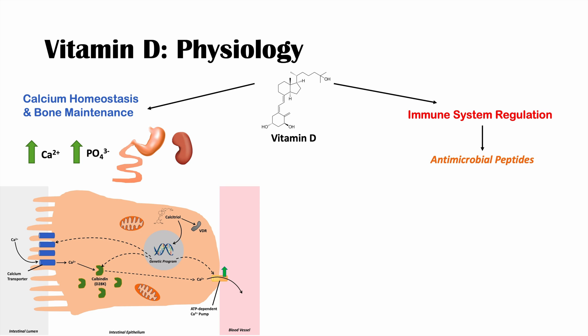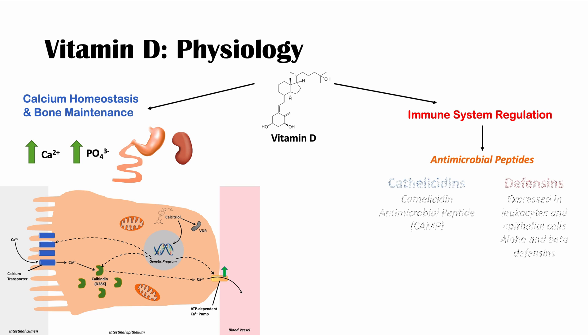Vitamin D is involved in immune system regulation by inducing expression of antimicrobial peptides — peptides that act against microbes. These include cathelicidins, such as the cathelicidin antimicrobial peptide (CAMP), and another category of antimicrobial peptides called defensins.